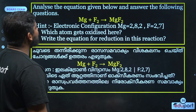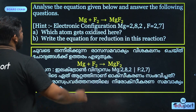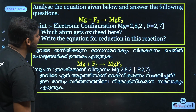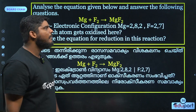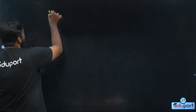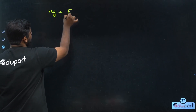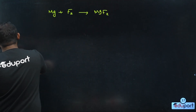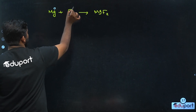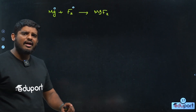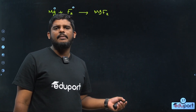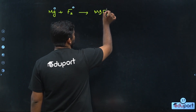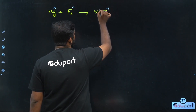Then, analyze the equation given below and answer the following question. This is the equation: Mg plus F2 gives MgF2. Which atoms get oxidized here? Now let's ask this question. Mg plus F2 gives MgF2. Then, charge here — this has no charge. I have no charge. Then the fluoride is minus. We will find the fluoride — it is minus 2.